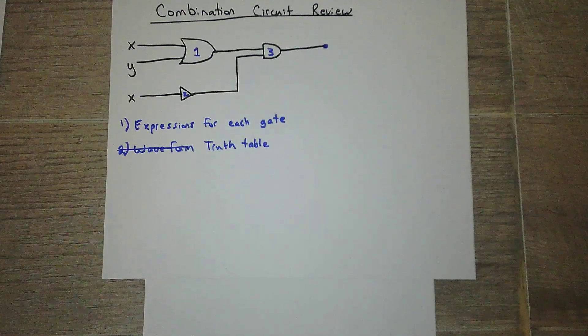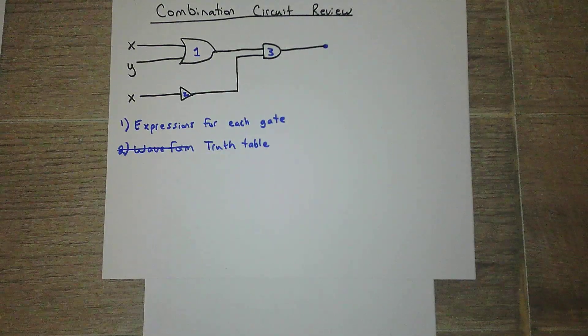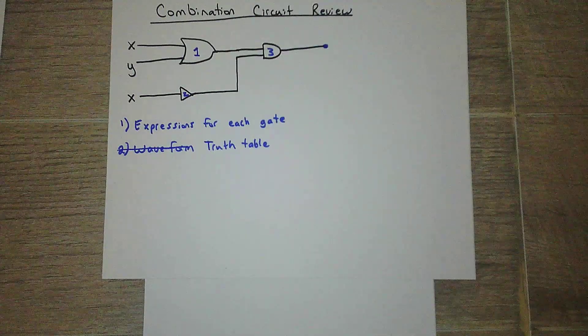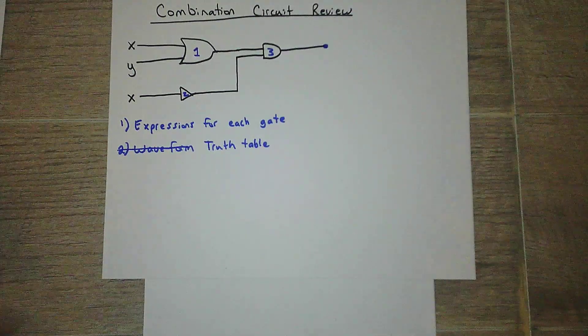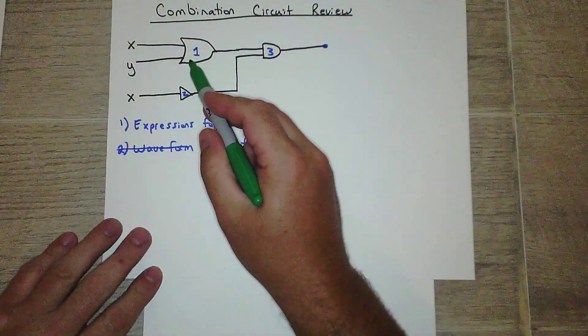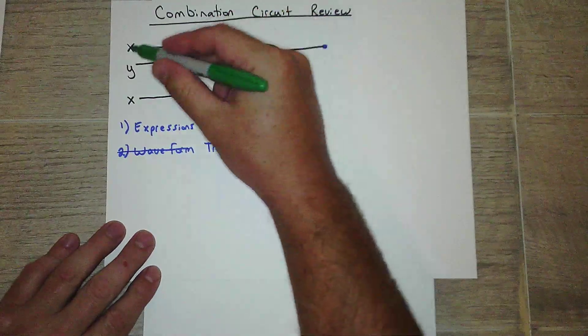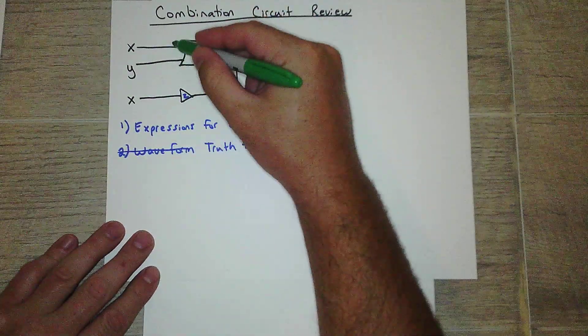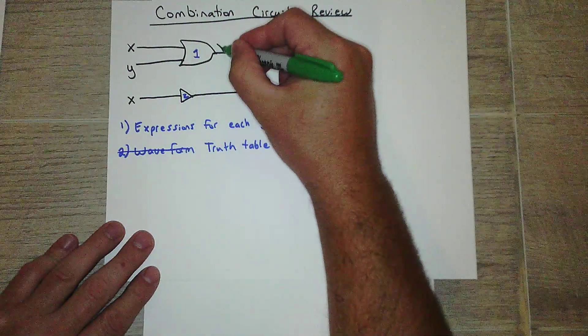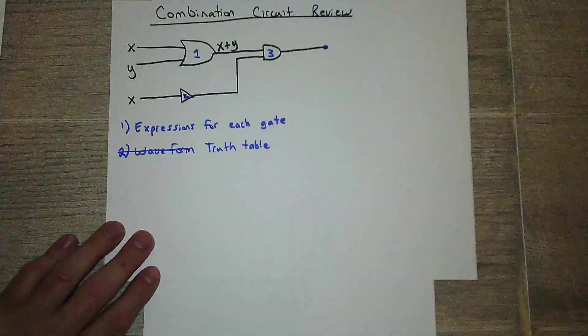Okay, so let's look at the expression after each gate. Okay, so this is an or gate. So then the output is, so my inputs are x and y, so my output is x or y.